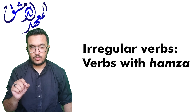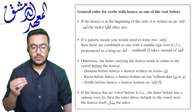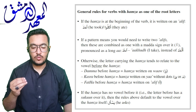Here are the general rules for verbs with Hamza as one of the root letters. If the Hamza is at the beginning of the verb, it is written on an Alif — for example, أَخَذَ (he took) and أَكَلَ (they ate). If a pattern requires two Alifs, these are combined as one with the Maddah sign over it, pronounced as a long 'aa' — so آخُذُ (I take) instead of أَأْخُذُ.